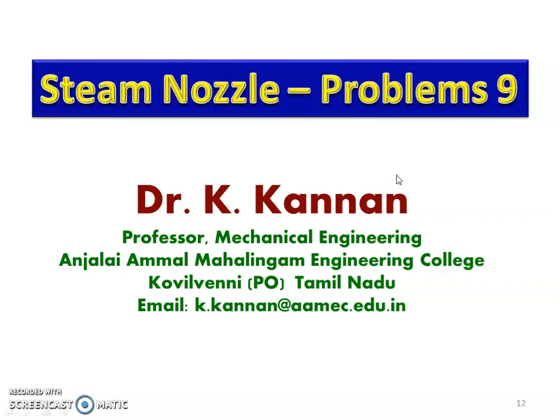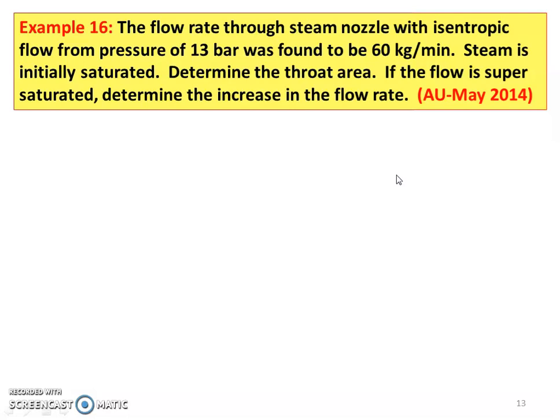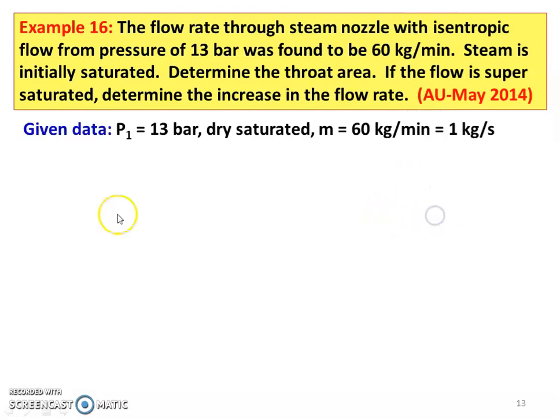Welcome back to Problems in the Steam Nozzle. Problem number 16 from the May 2014 question paper. The flow rate through a steam nozzle with isentropic flow from a pressure of 13 bar was found to be 60 kilograms per minute. Steam is initially saturated; determine the throat area. If the flow is supersaturated, determine the increase in flow rate. Given data: pressure P1 = 13 bar, dry saturated steam, and mass flow rate = 60 kilograms per minute, which is 1 kilogram per second.